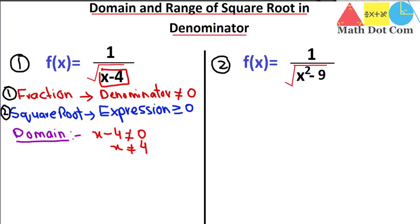Now applying condition number two: the expression under the square root in the denominator should be greater than or equal to zero. The expression is x minus four, so x minus four ≥ 0, which gives x ≥ 4.